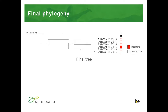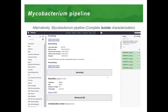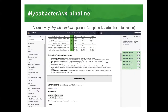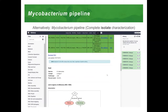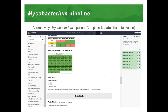If we then combine all the results of all the different steps, we obtain this final phylogenetic tree with bootstrap values, along with the sequence types and the AMR resistance profile for all of these samples. Alternatively, we also have several pipelines that perform a complete isolate characterization, such as the one illustrated here for Mycobacterium.